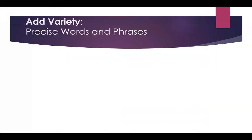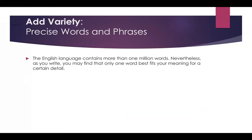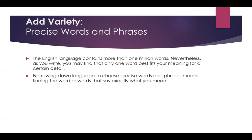Adding variety with precise words and phrases would make your writing much better. As you know, the English language contains more than one million words. Nevertheless, you may find that only one word best fits your meaning for a certain detail. So always try to find the accurate words to describe your feeling or what you mean. That's why, if you have time, always use dictionaries and a thesaurus to make your vocabulary much better. Narrowing down language to choose precise words and phrases means finding the word or words that say exactly what you mean, which is important.